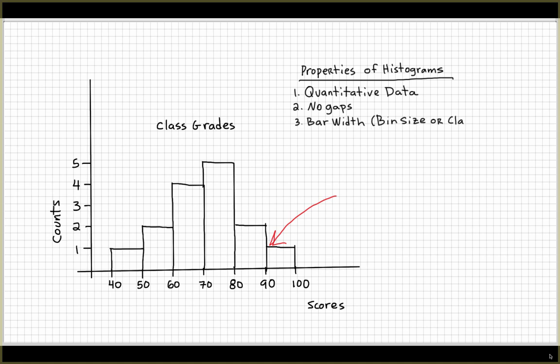Another thing that the histogram has is the bar width. The bar width is constant in a histogram. In books sometimes they'll say the bin size is something or the class size is something. In the case of our graph here, the bin size is going to be 10, and you can see that it's consistent with all of these bars.